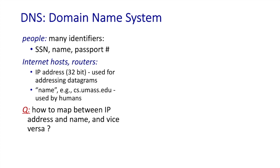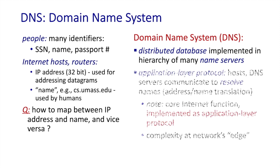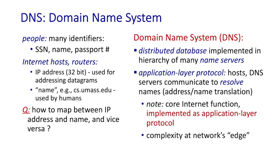The domain name system is a distributed database. Its contents are records containing information about translation among host names, services, and IP addresses. The DNS itself is a hierarchy of servers spread around the internet that communicate with each other to provide this name translation service. Importantly, the DNS is implemented as an application layer service — by servers that sit at the network edge rather than at routers and switches inside the network.